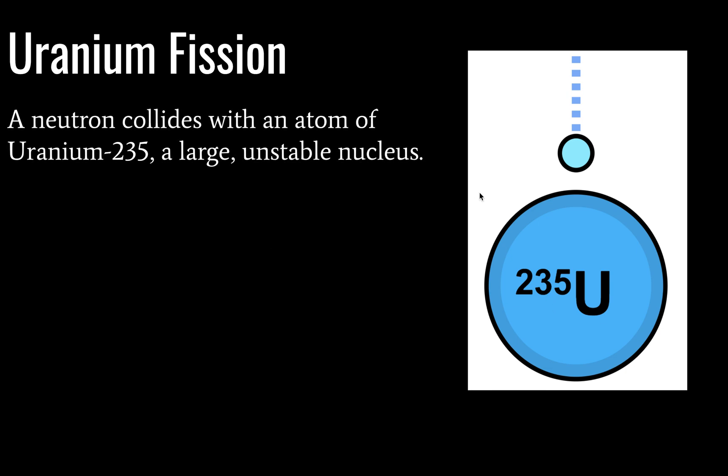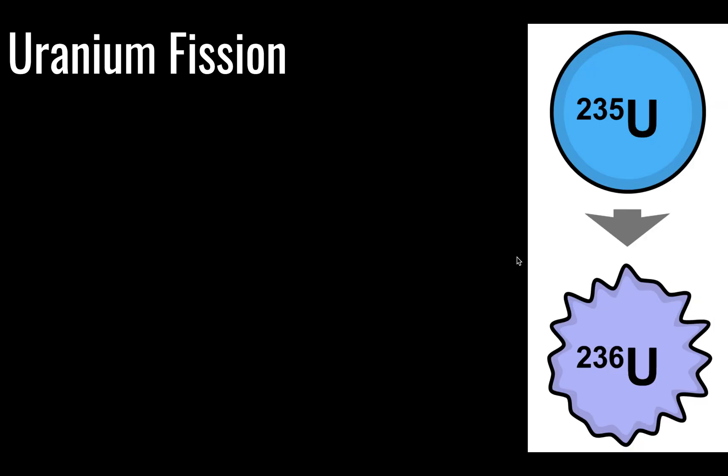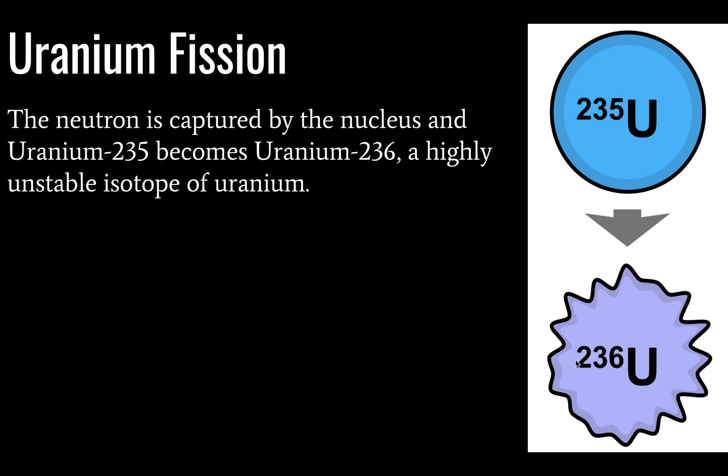What's happening here is we have the collision of a neutron with uranium-235, which is already a large and unstable nucleus. But the addition of that neutron is going to make our new uranium isotope, uranium-236, much less stable.